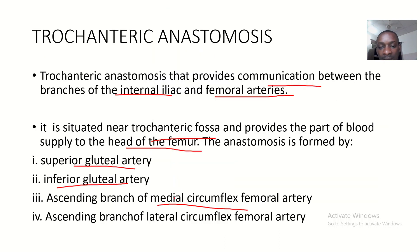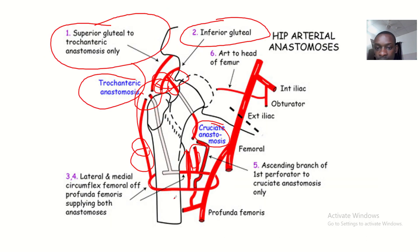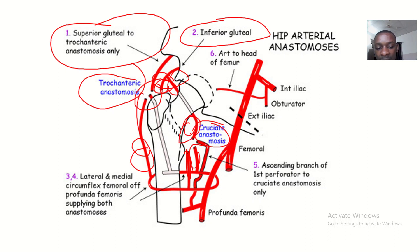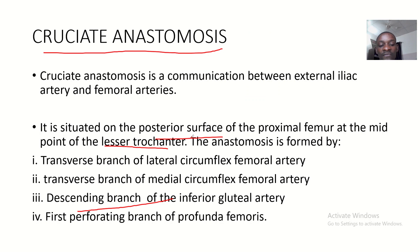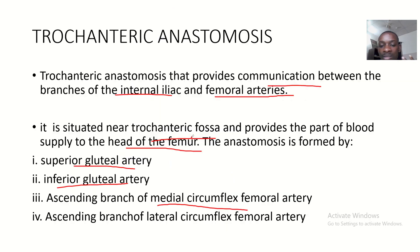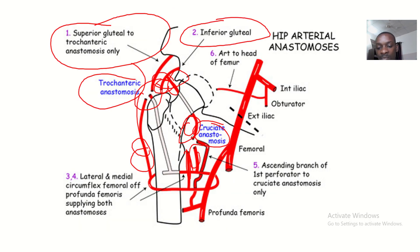It is also formed by the descending branch of the inferior gluteal artery — that branch goes down from the inferior gluteal. And finally, it is formed by the first perforating branch of the profunda femoris artery, which is properly labeled on the image.